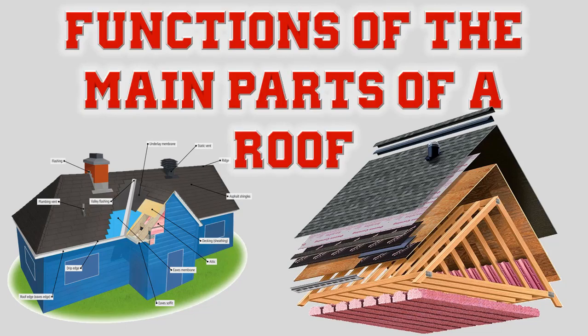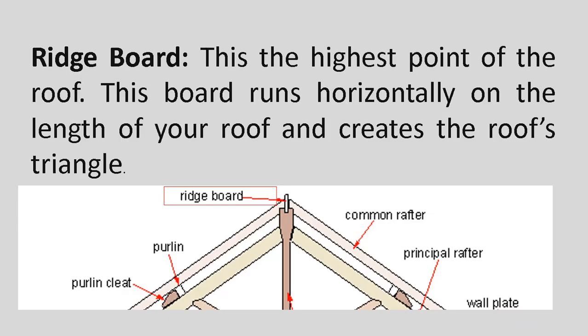Functions of the main parts of a roof. Ridgeboard: This is the highest point of the roof. This board runs horizontally on the length of your roof and creates the roof's triangle.